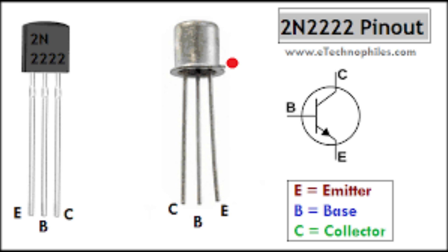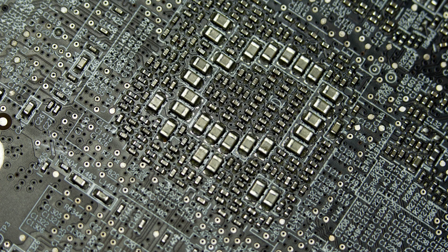Collector-Emitter Voltage (VCE) is the voltage that can be applied between the collector and emitter terminals without damaging the transistor; the maximum VCE for the 2N2222 is typically 30 volts. Gain, also known as DC current gain or beta, is the ratio of the output current to the input current; the typical gain for the 2N2222 is between 100 and 300. Power Dissipation is the maximum power the transistor can dissipate as heat without being damaged; the maximum power dissipation for the 2N2222 is typically 625 milliwatts.